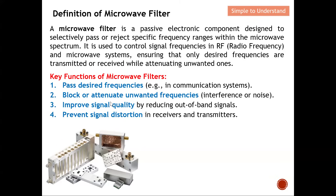Besides selecting signals, the microwave filter also helps to improve signal quality by reducing out-of-band signals. When you properly select only the desired signal, you improve signal quality because you can concentrate amplification and processing on that particular frequency band. As a result, these functions work together to prevent signal distortion in both the receiver and transmitter. This is the fundamental role of a microwave filter.